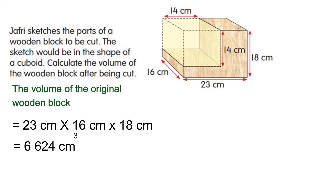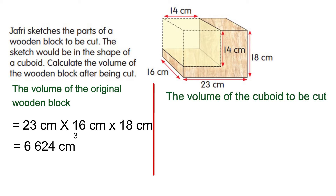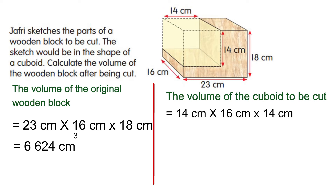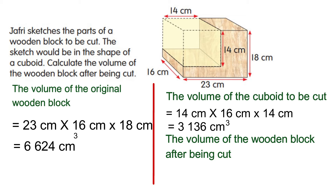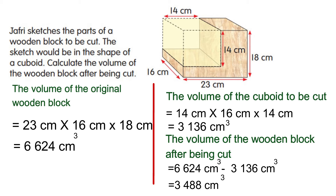The volume of the original wooden block is 23 cm × 16 cm × 18 cm = 6,624 cubic centimeters. Now find the volume of the cuboid to be cut — the length will be 14 cm. To find the volume after being cut, we subtract: 6,624 cubic centimeters minus 3,136 cubic centimeters. The volume of the wooden block after being cut is 3,488 cubic centimeters.